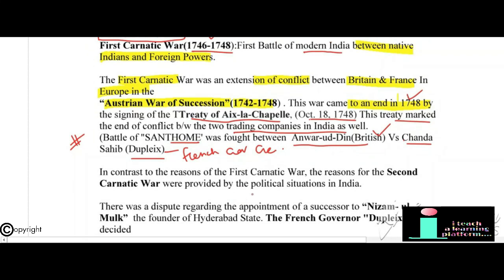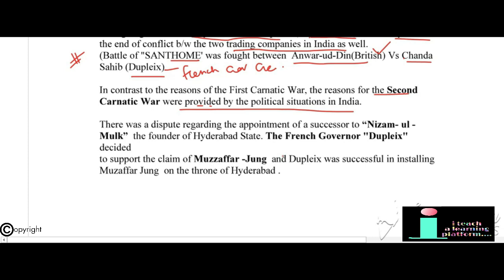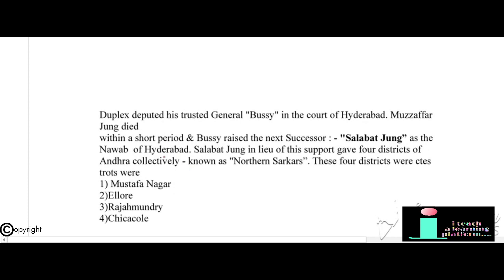The reasons for the Second Carnatic War arose from political situations in India regarding who would be the successor of the Hyderabad state after Nizam-ul-Mulk, the founder of Hyderabad and wazir to the Mughal Emperor Muhammad Shah. French Governor Dupleix decided to support Muzaffar Jang's claim and successfully installed him on the Hyderabad throne. Dupleix's trusted general Bussy was deputed at the Hyderabad court. Muzaffar Jang died shortly after and Bussy raised the next successor Salabat Jang as Nawab of Hyderabad.